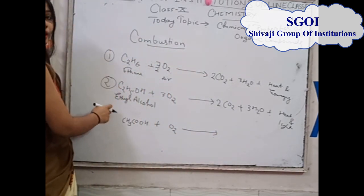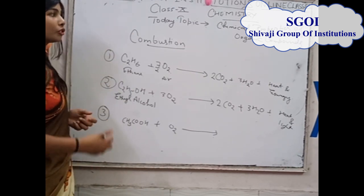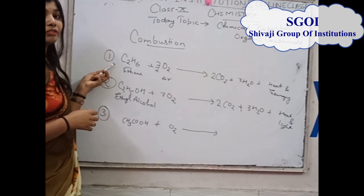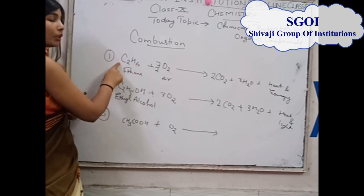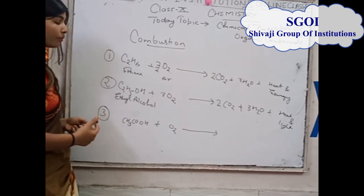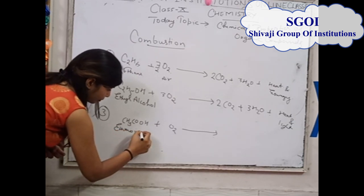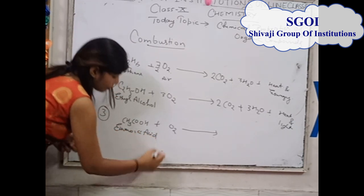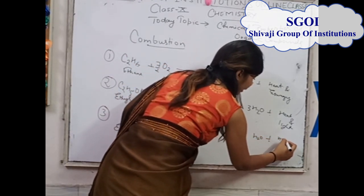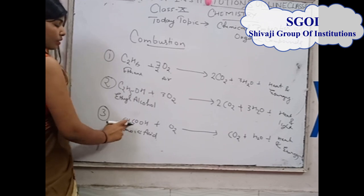Those types of compounds which contain carbon are known as organic compounds. In the combustion reaction of organic compounds, you can take any type of organic compound containing carbon — C2H6 contains carbon, C2H5OH contains carbon, and CH3COOH, which is the formula of ethanoic acid, also contains carbon. When ethanoic acid reacts with air (O2), it gives CO2 and H2O, as well as heat and light.